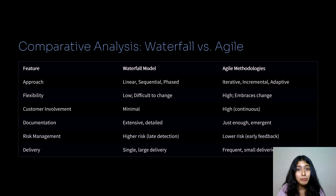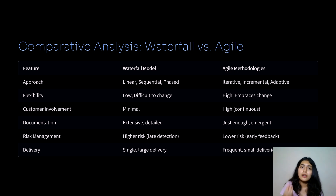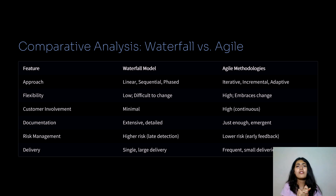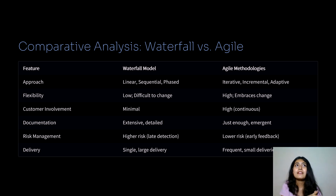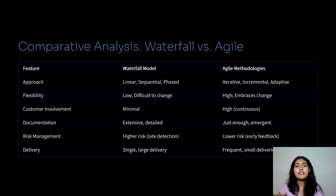Once requirements are frozen in waterfall, there is no further customer interaction. In agile, customer involvement is very high — in each step and each iteration, customer involvement is important. Documentation: documentation is very strong in waterfall because requirements must be specified clearly so no bugs arise in further steps. In agile, documentation can be very light since requirements can change anytime. Risk management: waterfall is highly risky because if frozen requirements lead to errors, it results in failure. Agile risk is very low because continuous feedback allows you to improve product quality.